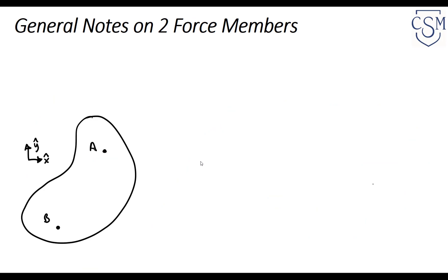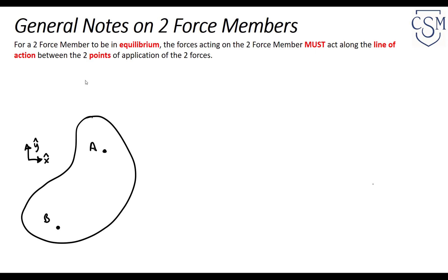This is the conclusion we can make using equilibrium and our free body diagram. For a general body — call it a massless blob with forces applied at points A and B — those forces must be directed along the line of action between A and B if this is truly a two-force member.